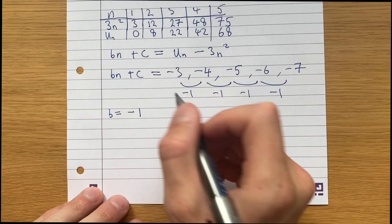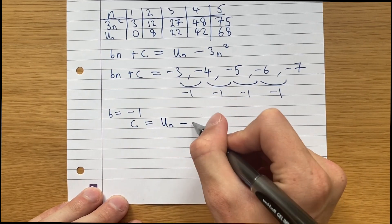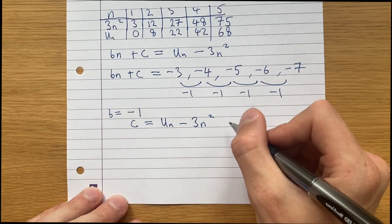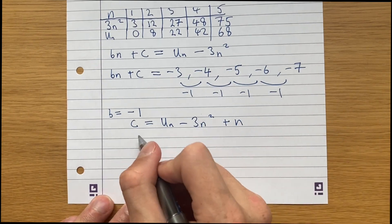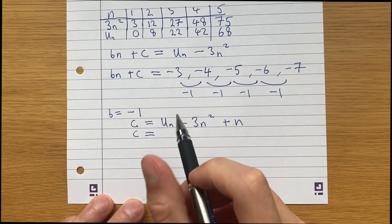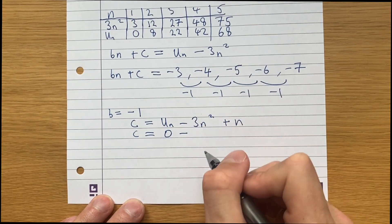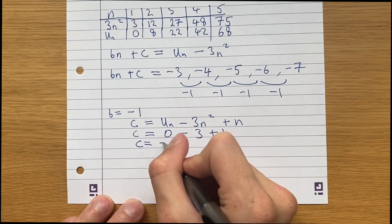And finally, we can then sub that value in to tell us that c is equal to un minus 3n squared plus n. So if we just take the case when n is 1, because that would be the easiest, we just get that c is equal to u1, which is 0, minus 3 times 1 squared, which is 3, plus 1. So c is equal to minus 2.